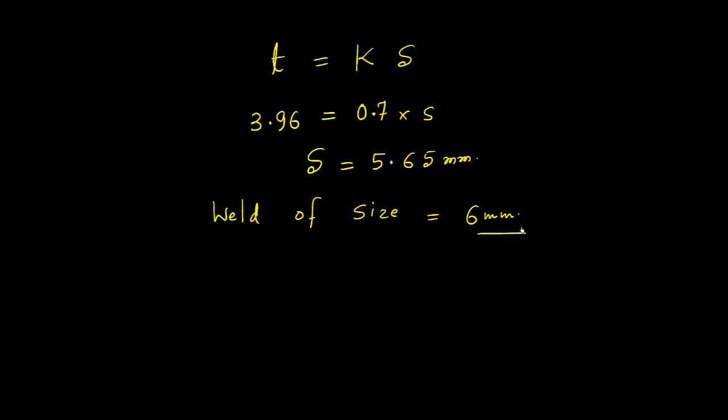Rounding up, we can provide a weld of size 6 mm. If we provide a 6 mm fillet weld, the connection will be safe. To summarize: in this video we have seen how to calculate the equivalent stress using IS 800 for a case with direct shear due to force P, shear due to twisting moment M, and bending stress. We then equated the equivalent stress with the code formula to calculate the required weld size. Thank you.